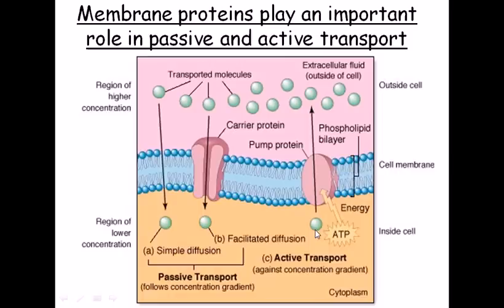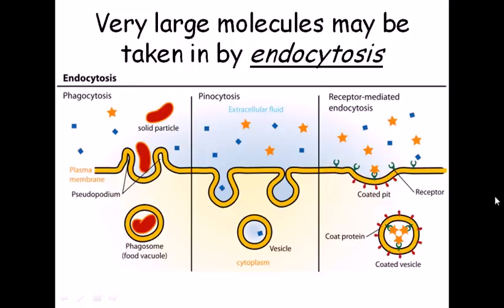In active transport, substances move from lower concentration toward higher concentration, requiring energy. This energy is provided by the cell's energy currency, ATP (adenosine triphosphate). Carrier or protein molecules may also be needed. Very large molecules may be taken up by endocytosis.